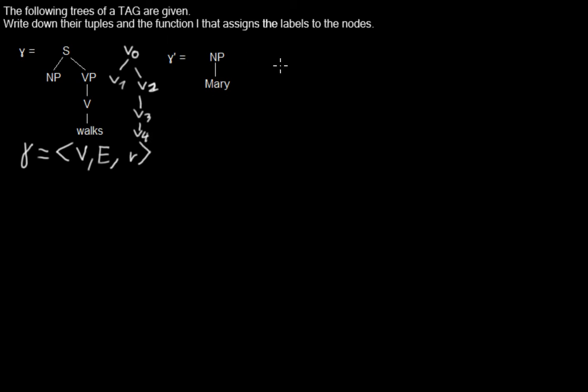And we do the same for the second tree. NP will be V5. So I go on with the numbering so we don't have two nodes with the same number, with the same name. And Mary will be our V6.